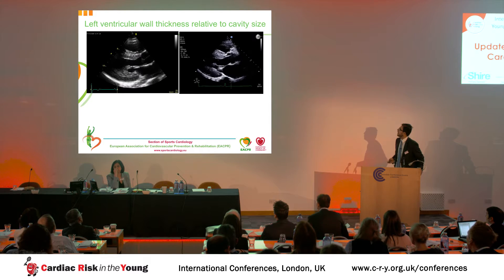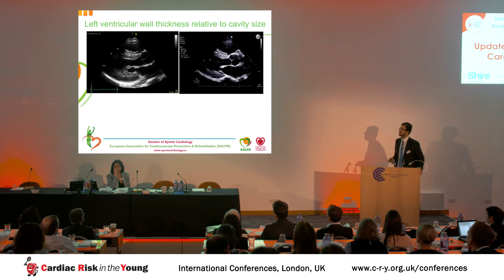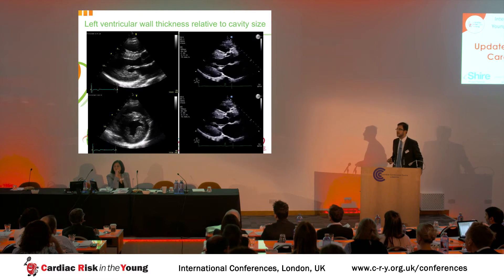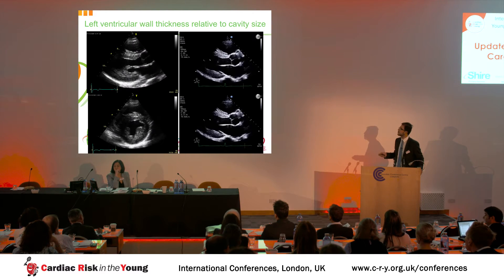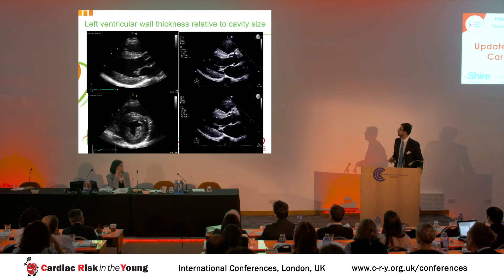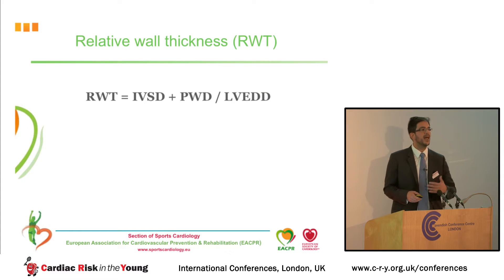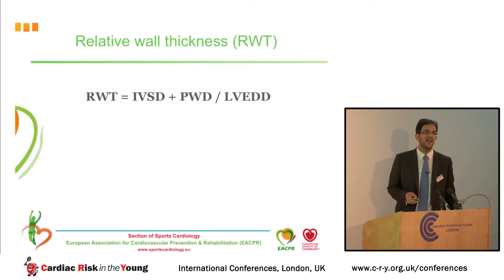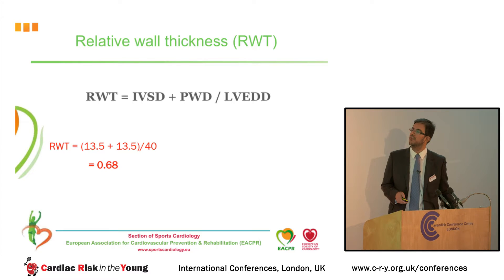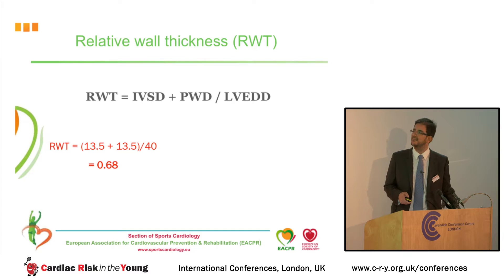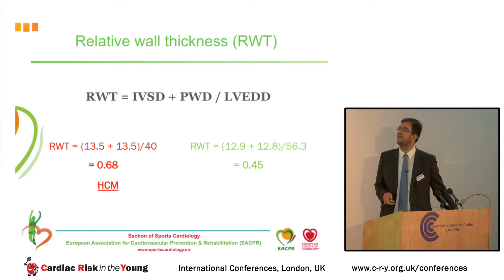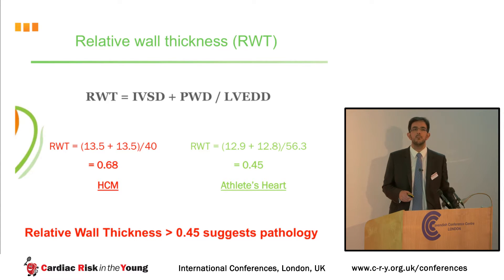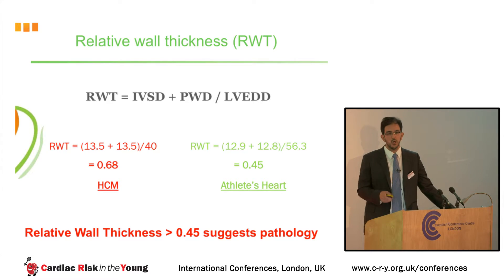We have two echocardiograms: one of an athletic individual with hypertrophic cardiomyopathy, one with physiological left ventricular hypertrophy. Both have a wall thickness of about 13 mm, but one has a cavity of 40 mm compared to the other with an end-diastolic dimension of 56 mm. If you calculate the relative wall thickness — by taking an average of your septum and posterior wall measurements divided by the LV end-diastolic cavity — the HCM individual gives 0.68 and the athletic individual gives 0.45. So a relative wall thickness above 0.45, and definitely above 0.5, should prompt consideration of pathology over physiology.